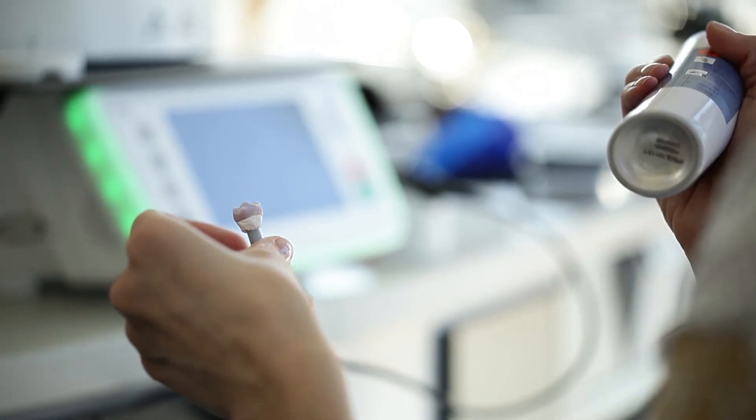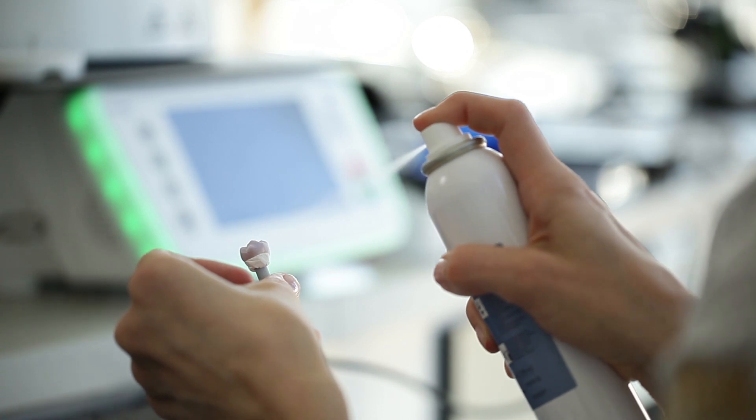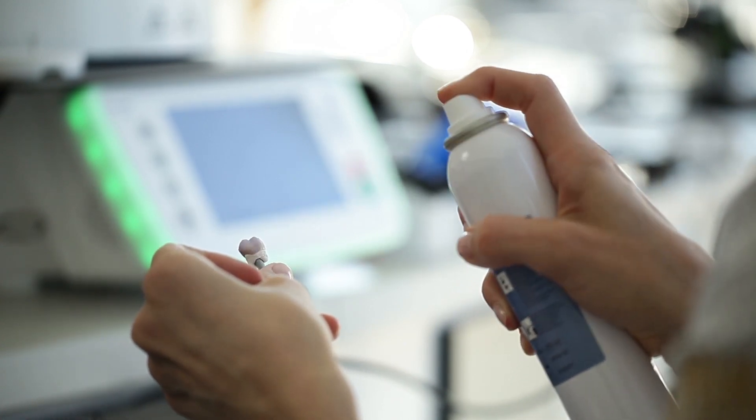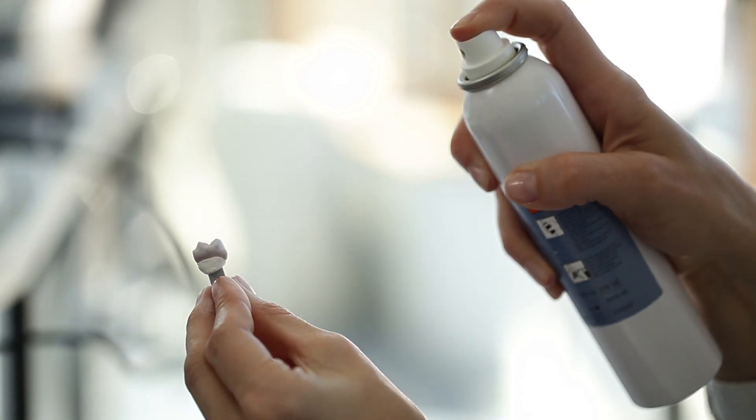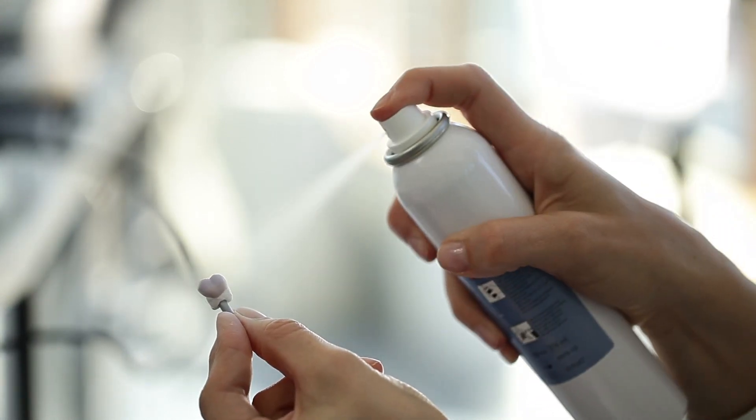Before you apply the IPS Emax glaze spray, vigorously shake the can until the mixing ball moves freely within the container. Spray the glaze at a distance of approximately 10 centimeters directly on the unfired stains.